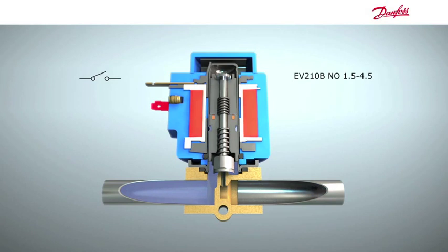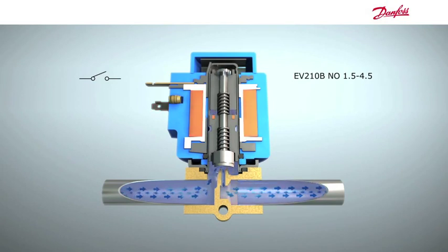When the coil is de-energized, the armature will return to its normally open state, allowing media to flow once again.